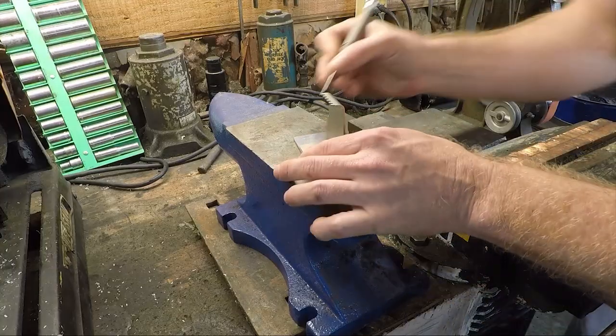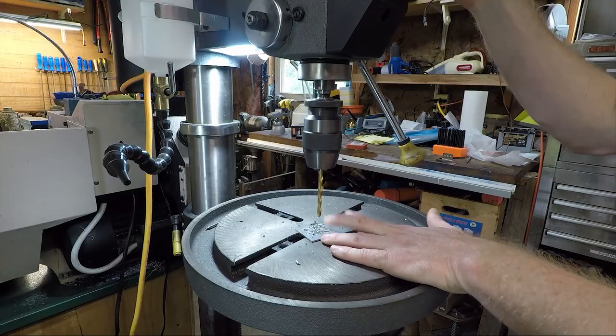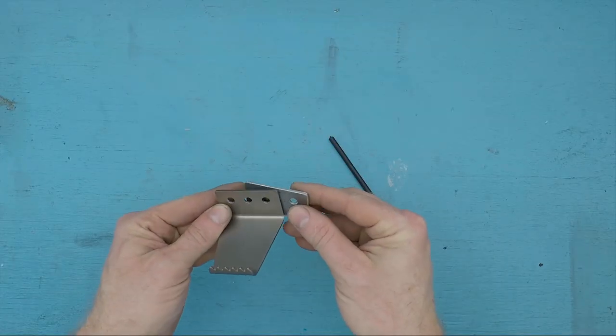While the parts are still stuck together, I'll trace the outer profile with a scribe, then drill three holes, cut to shape, and there it is. Perfect hole alignment.